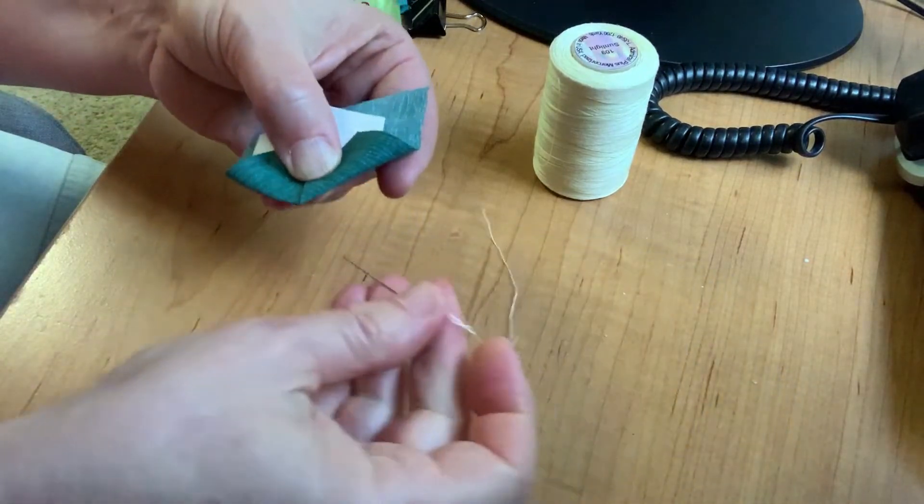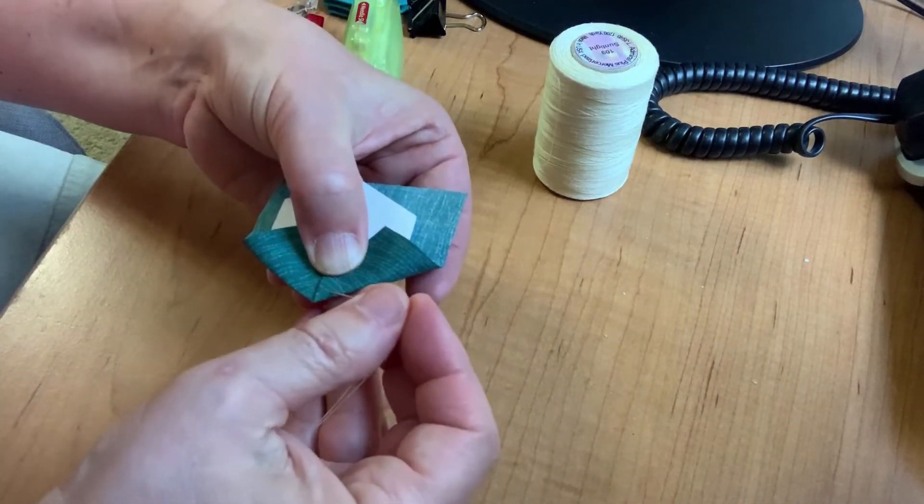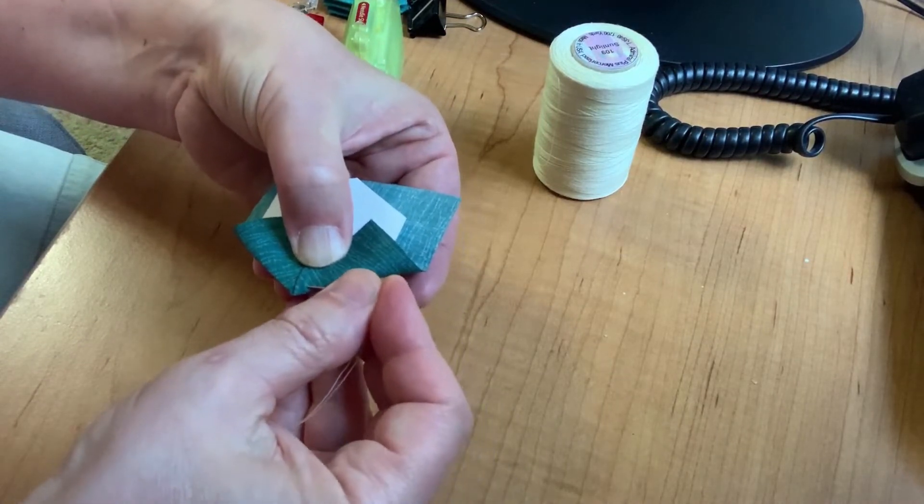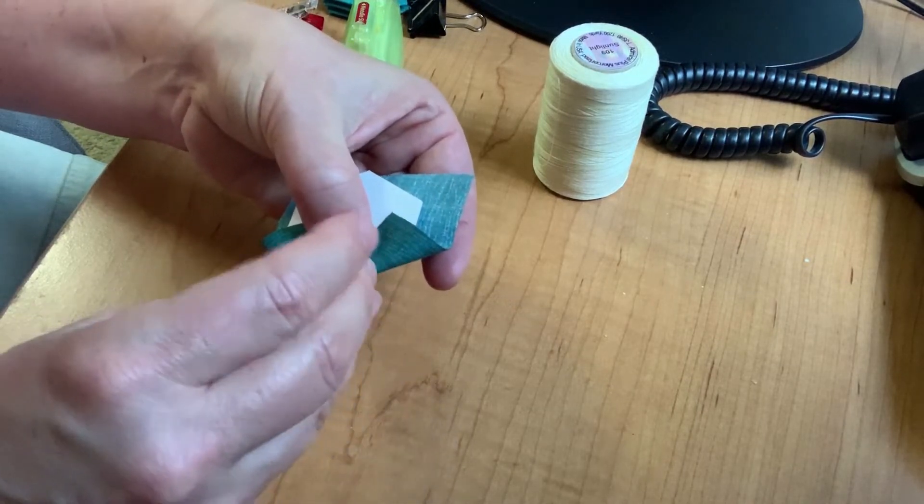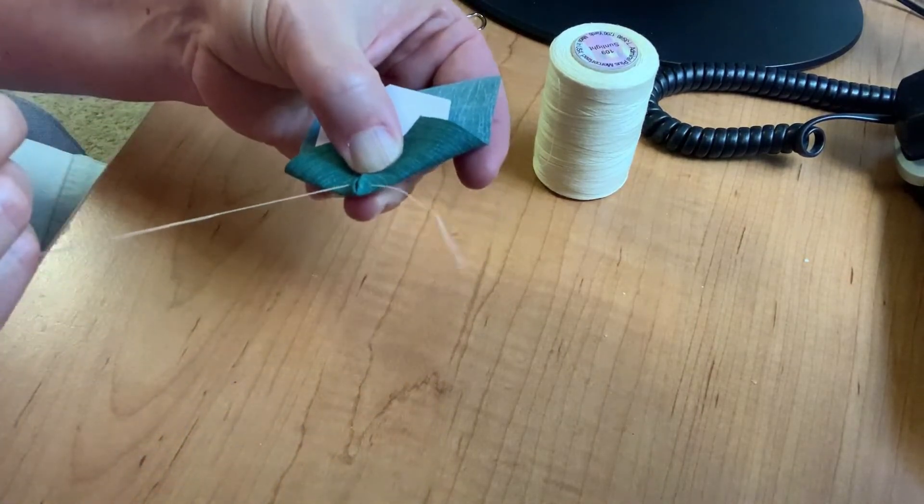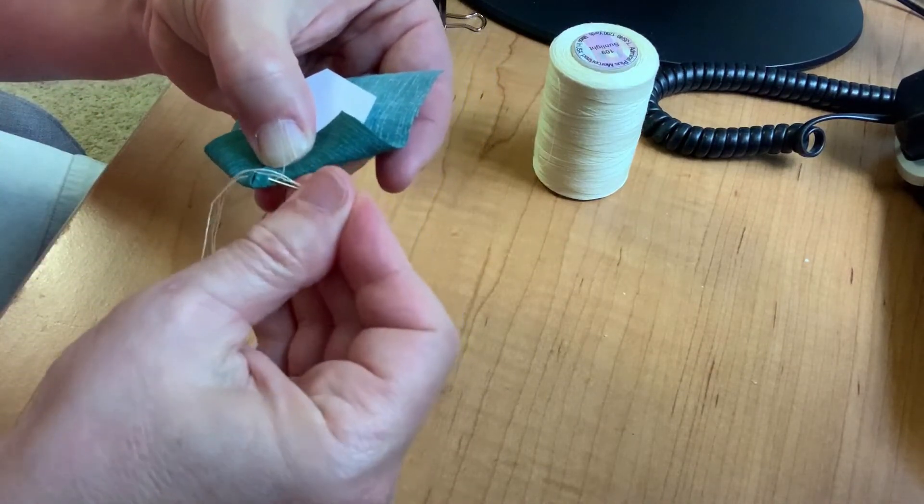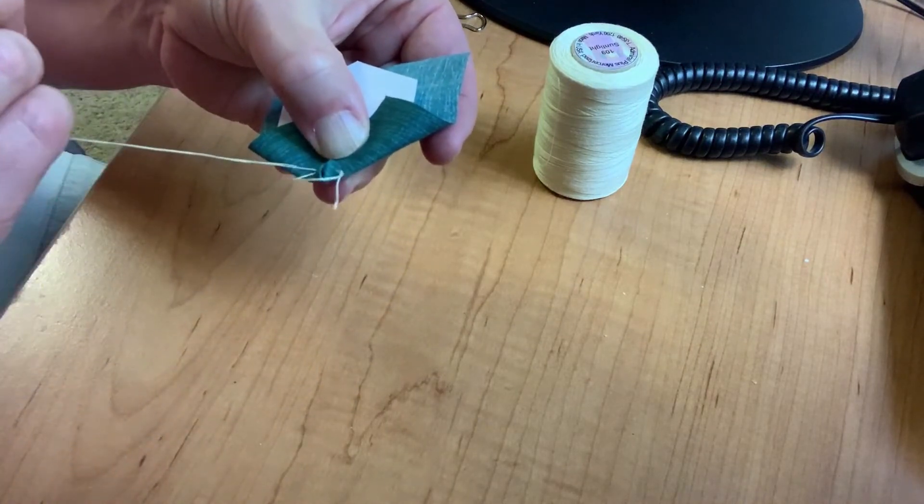Then I'm going to take my needle and thread and I'm going to sew from the second crease to the first, essentially sewing through that corner. I'm going to leave about a 1-inch tail and then I'm going to go back and sew a second stitch over that same corner.